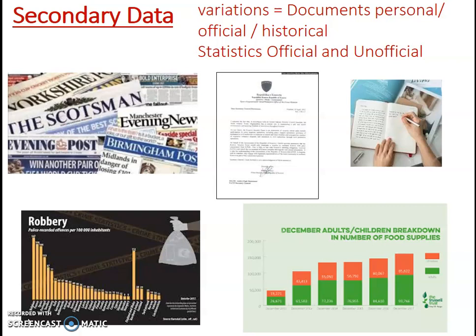The other type of secondary data is statistics. You get official statistics produced by government agencies — collected regularly, normally at the same points in the year, and collected in the same or similar way. You also get unofficial statistics collected by private companies or charities. For example, crime statistics on the left, and food bank usage collected by a food bank trust on the right. Statistics are quantitative, so it's easy to spot patterns and trends.